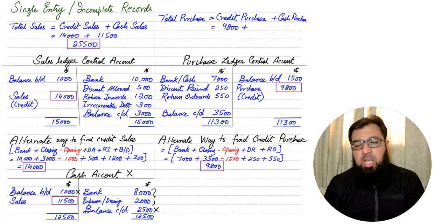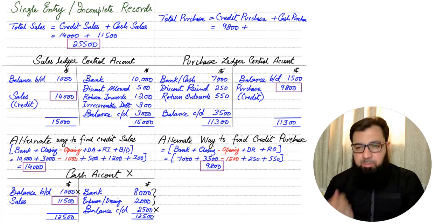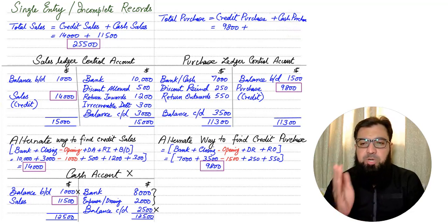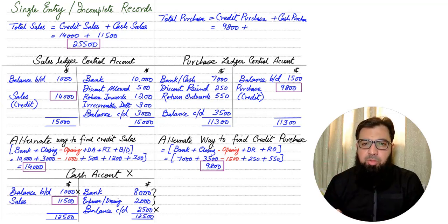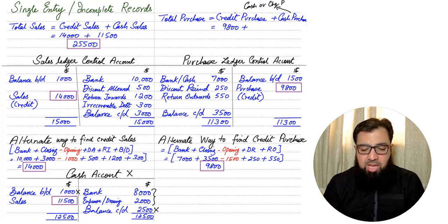When we are done finding the credit purchase, we need to consider cash purchase. Cash purchase refers to a purchase for which payment has been made immediately, no matter the mode of payment — whether through cash, cheque, debit card, or wire transfer. All of these become part of cash purchase.